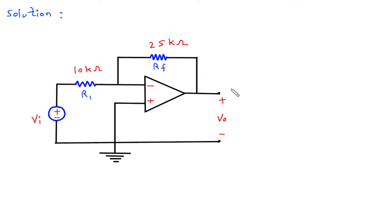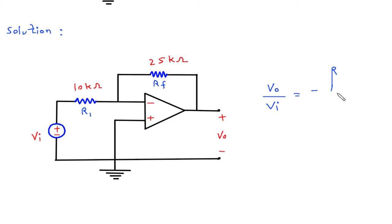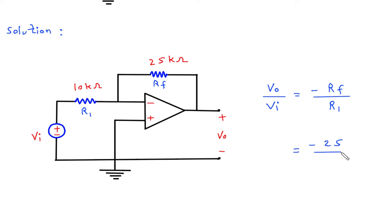Now since this is an inverting amplifier, Vo divided by Vi is equal to minus Rf by R1. Here Rf is 25 kΩ, so this will be minus 25 divided by R1. Now R1 is 10 kΩ, so this will be minus 2.5. This is the value of Vo by Vi.